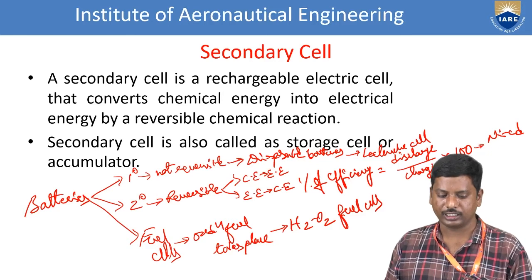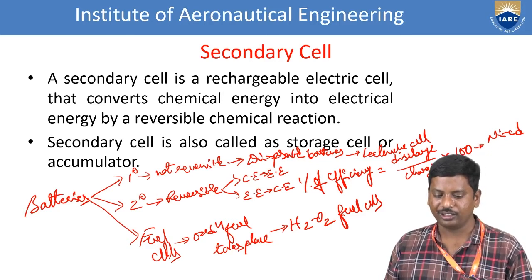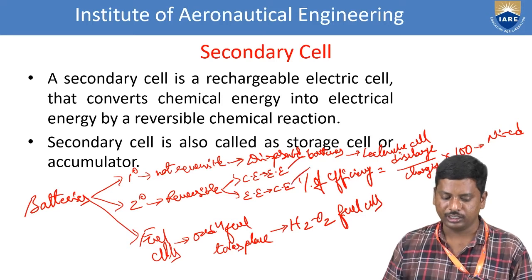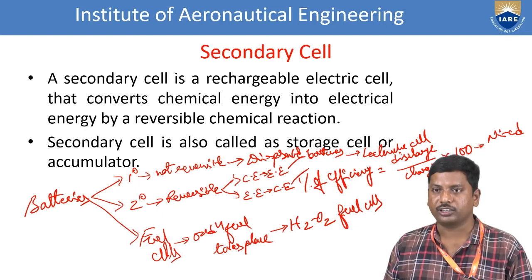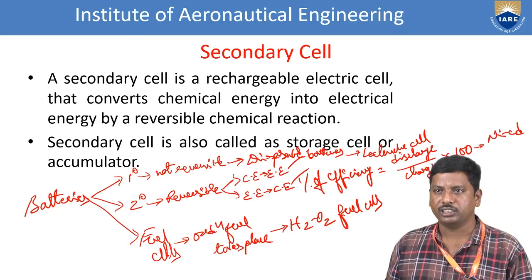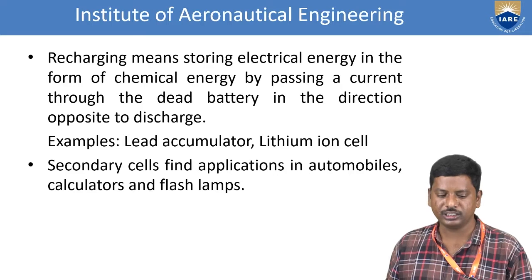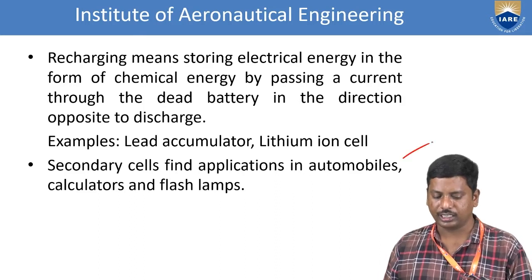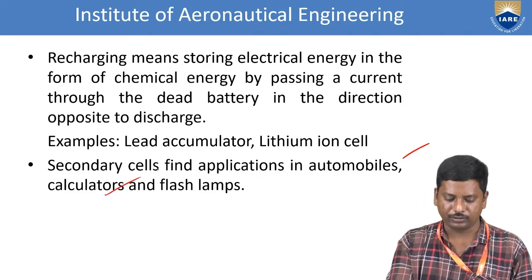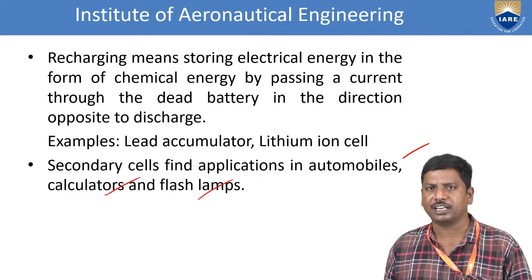A secondary cell is a rechargeable electrochemical cell that converts chemical energy into electrical energy by a reversible chemical reaction. Based on this phenomenon, a secondary cell is also called a storage cell or accumulator. Recharging means storing electrical energy in the form of chemical energy by passing current through the dead battery in the direction opposite to discharge. Examples include lead accumulators and lithium-ion cells, used in automobiles, calculators, and flash lamps.